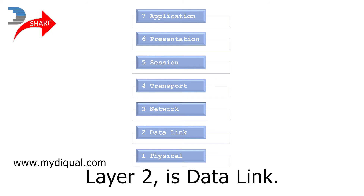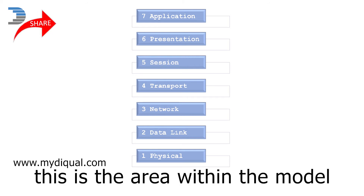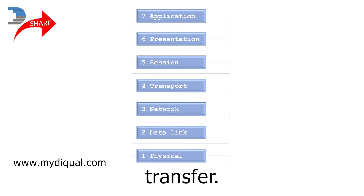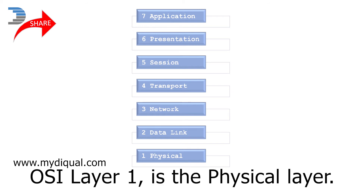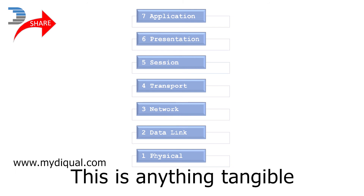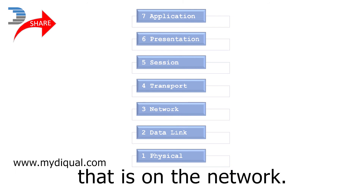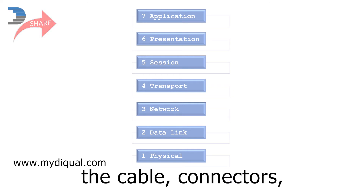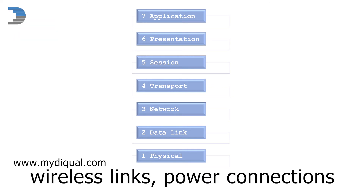Layer 2 is data link. This is the area within the model that provides point-to-point data transfer. OSI layer 1 is the physical layer. This is anything tangible that is on the network — for example, the cable, connectors, wireless links, power connections, etc.